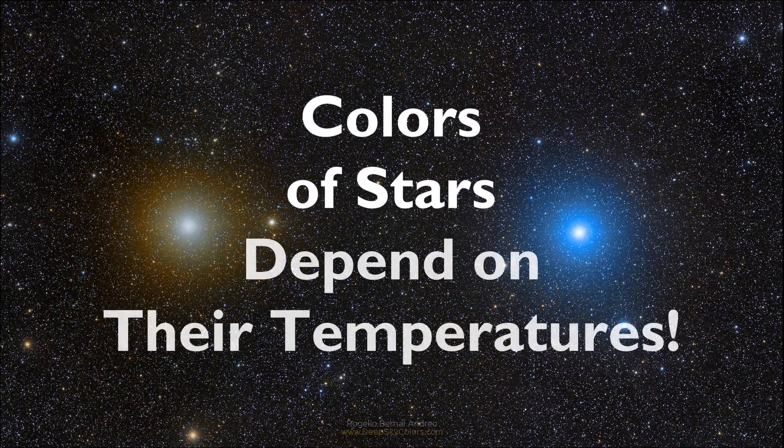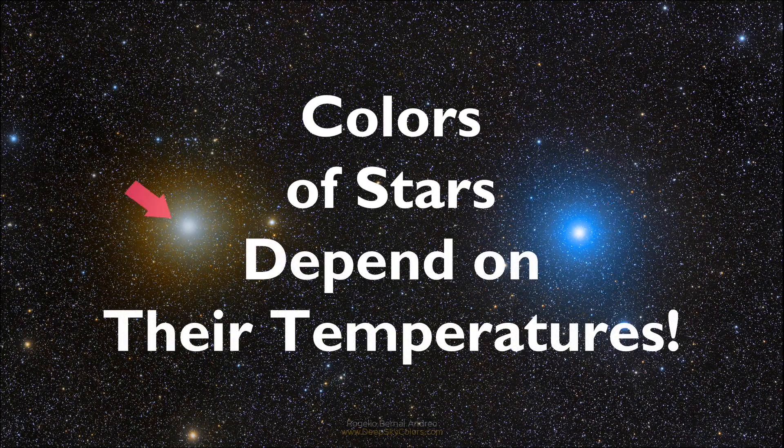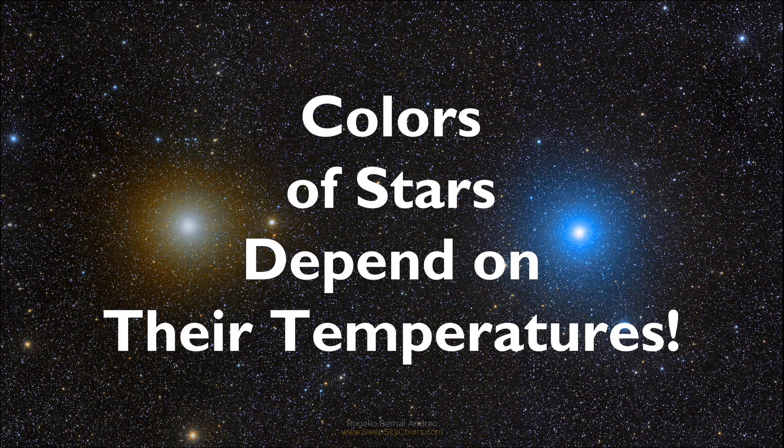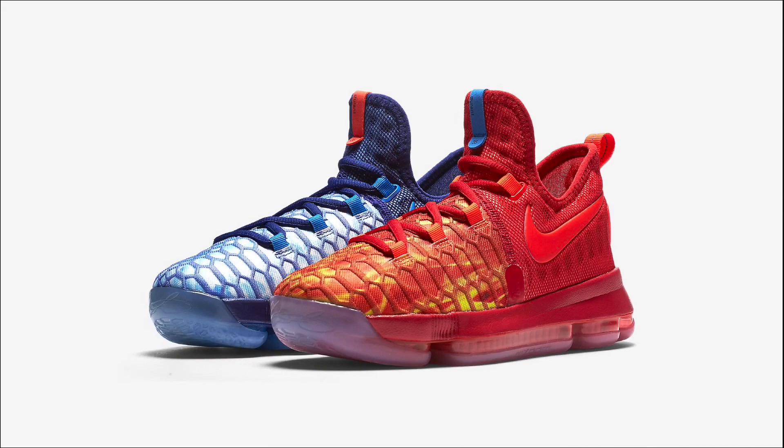The colors of stars depend on their temperatures. A blue star is much hotter than a red star. So the concept of red hot versus ice blue is kind of pointless here. If these shoes were stars, the blue shoe would have a much higher temperature.